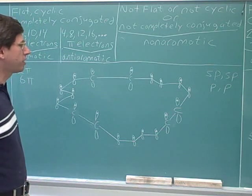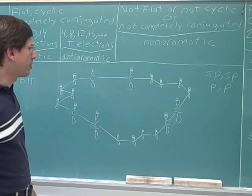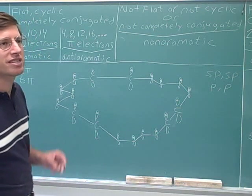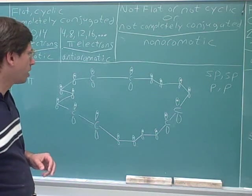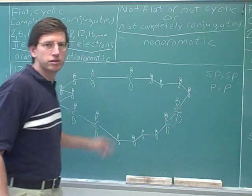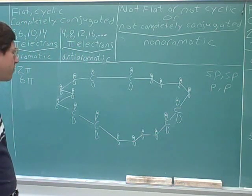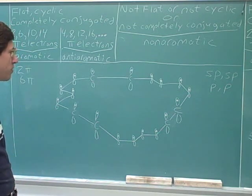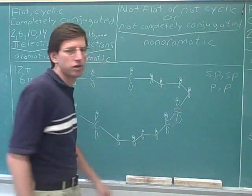Now we can clearly see that this molecule is completely conjugated. Completely conjugated means side-to-side overlapping p orbitals at every atom in the ring. All of these p orbitals are vertical, so they form a complete unbroken conjugated system of overlapping p orbitals going all the way around the ring.